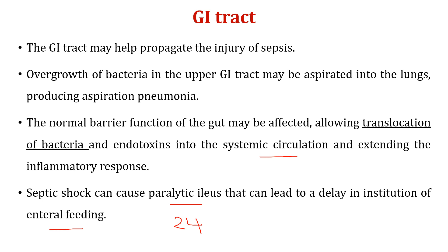Regarding the gastrointestinal tract, remember that in the case of sepsis or injury, bacteria and microorganisms can be translocated from the GI system and release their toxins. These toxins can reach the systemic circulation and extend the inflammatory process. Septic shock can cause paralytic ileus and lead to delay in feeding. As a critical care nurse, you must start enteral feeding as early as possible within the first 24 hours of ICU admission.